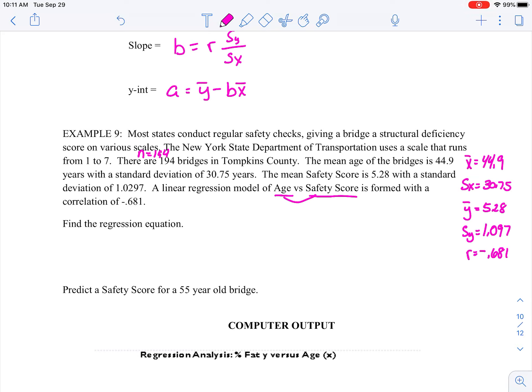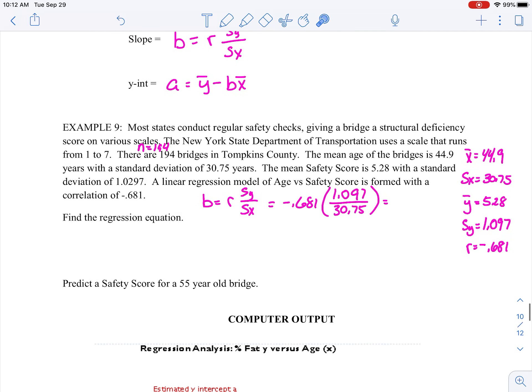So again, to find that regression line, I'm going to need a slope, and I'm going to need a Y-intercept. And again, that slope is found by taking my R value times the standard deviation of Y over the standard deviation of X. So that means that when we do this, we have R is going to be a negative 0.681. We're going to take that times the ratio of Y, which is 1.097 to the standard deviation in X, which is 30.75. Again, this is a very plug-and-chug section. We were given an equation. We were given an equation. We substituted into it. And then that means all we have to do is generate an answer. That's a negative 0.0228. So we have the slope. So for every additional year of age, the safety score is going to decrease by a negative 0.0228. That's what we found.